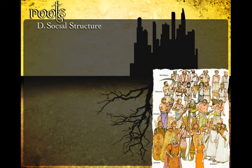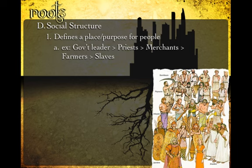The next aspect is social structure. A social structure defines the place and purpose for all the people in society. Government leaders have more power and authority than priests, who serve a different role than merchants, farmers, and — in most every society until the Industrial Revolution — some form of slavery. All advanced civilizations have some way of creating a social hierarchy of who has more freedoms and privileges than others.